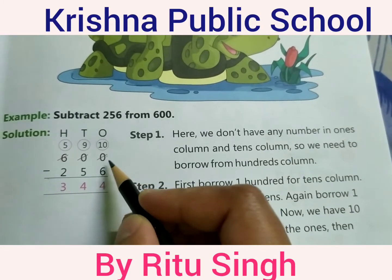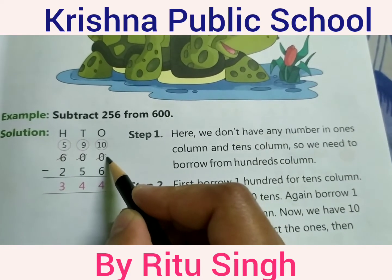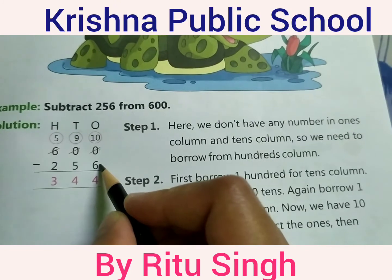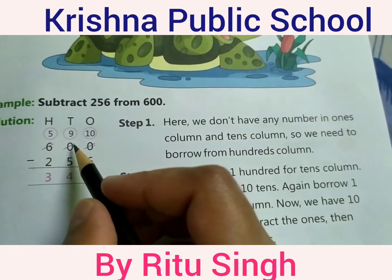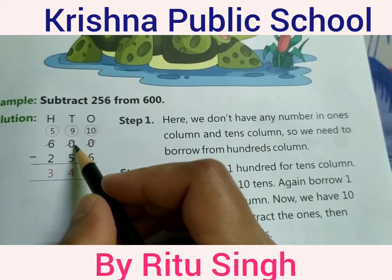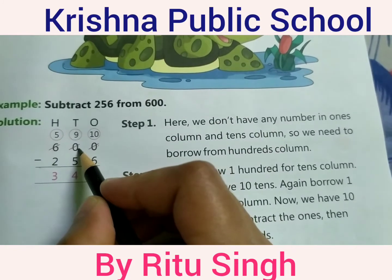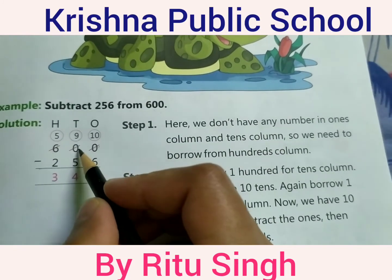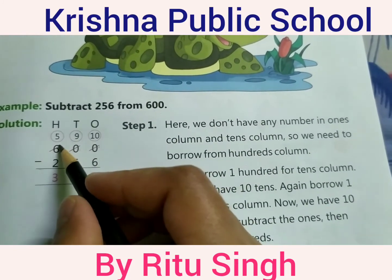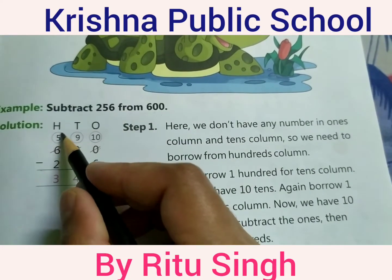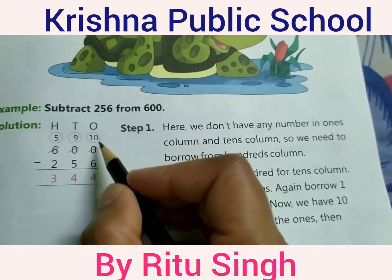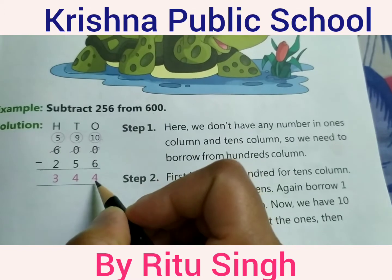0 minus 6 — 0 is a smaller digit compared to 6. You can borrow from the tens position, but the tens position has 0. So you borrow from the hundreds position. The tens becomes 9 and the ones becomes 10. 10 minus 6 equals 4.